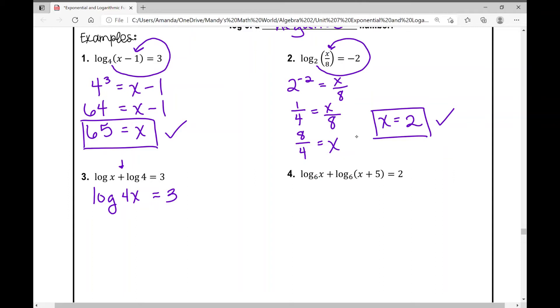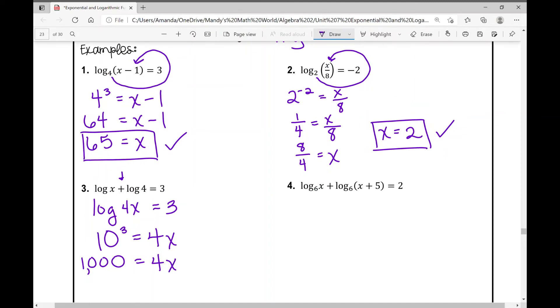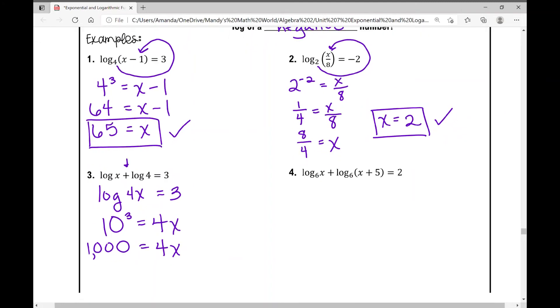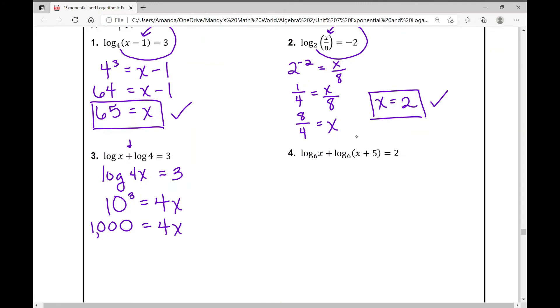And remember that if there's no base written, that's an assumed base of 10. So when I rewrite this in exponential form, it's going to be 10 to the power of three equals four times x. What is 10 to the power of three? That's a thousand. And then how do I get x all by itself? I divide both sides by four and I get 250 equals x. And there's my answer.